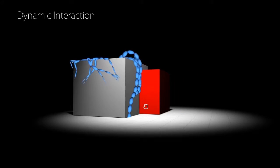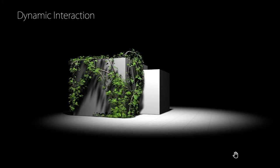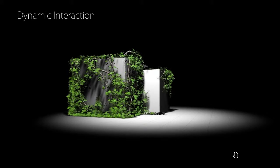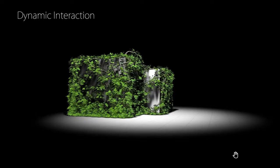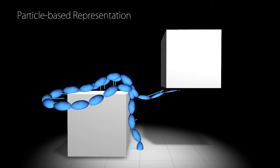Our plants are modeled as dynamically interacting particle systems. They can be edited at any time while they also dynamically interact through changes in the environment. Each particle stores biological and physical attributes that drive plant growth and its adaptation to the environment.